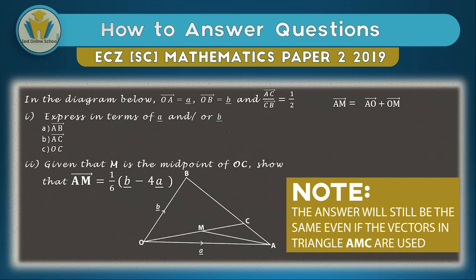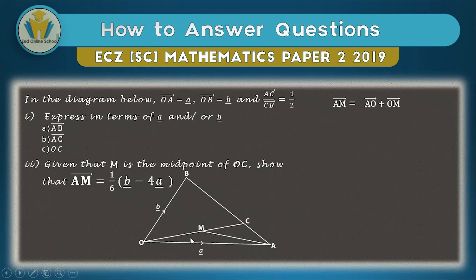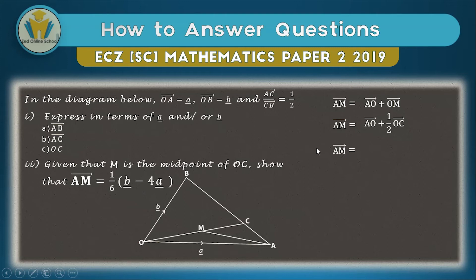We need vector OM, which we can find because we already found OC. Since M is the midpoint of OC, vector OM equals half the value of vector OC. With AO giving a negative a, and OM equal to half of OC, we can now prove AM equals the given expression by substituting and expanding.